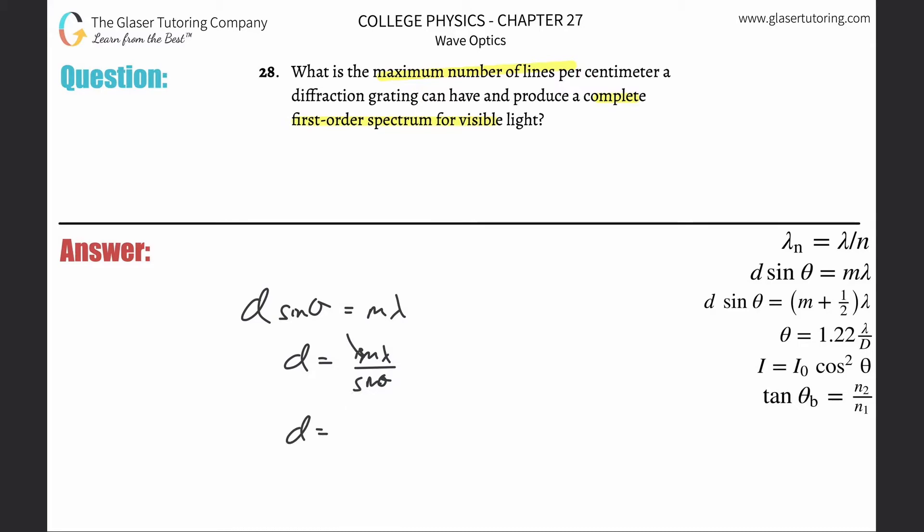The m is also 1, so what that tells us is that the distance between them is going to be equal to the wavelength.